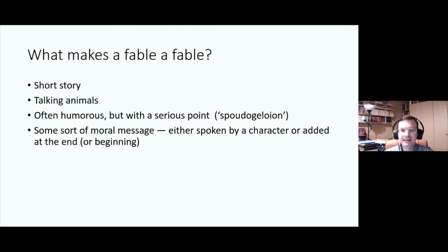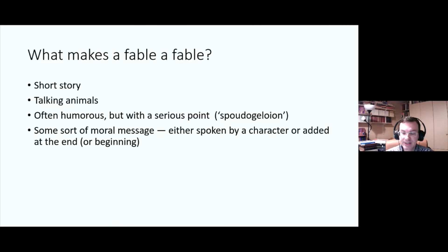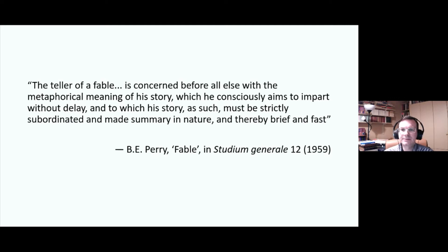One important aspect of these stories is that they're fundamentally jokes, either describing amusing situations or ending with a kind of punchline. This idea that one can use humorous means to put across serious messages is prominent in ancient Greek literature — I've given the Greek term for it here: spoudogeloion, or 'serious but a source of laughter.' And of course a fable contains an explicit moral, which sometimes comes first to introduce the story, or more often at the end, sometimes spoken by one of the characters but often added by a narrator. The great scholar of fable Ben Perry points out that fable has to be short because it has to make its moral message as clear as possible — the teller of a fable is concerned before all else with the metaphorical meaning, which he consciously aims to impart without delay, making the story summary in nature and thereby brief and fast.